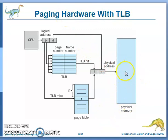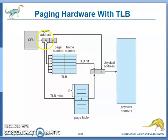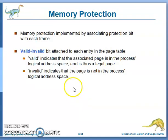This is called paging hardware with TLB. The TLB — translation look-aside buffer — works like a cache. If you previously used a particular address, you already have the frame number corresponding to that page number. Otherwise, you go to the page table to get the equivalent frame number.